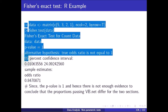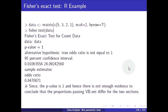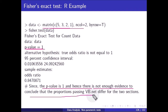In the R implementation, the p-value is 1. Hence there is no evidence to conclude that the proportions differ for the two sections.